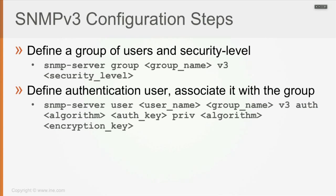Then you configure the username — the user to be used for authentication between the manager and the agent — and you associate it with the group that you have previously configured. Because the authentication between the server and the agent is done based on username and password, not based on groups. So you say SNMP server user, the username, associate it with the previously configured group name, say version 3, and then based on the security level defined at the group level, you configure either the authentication part, the encryption part, or none of them.